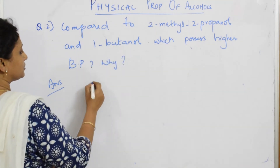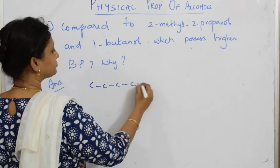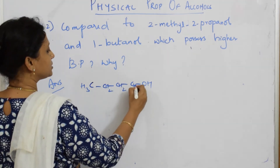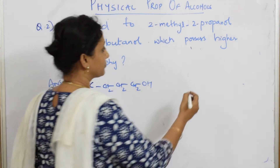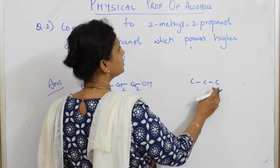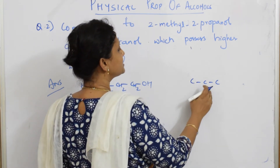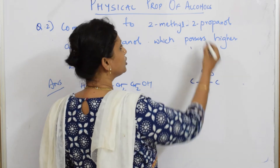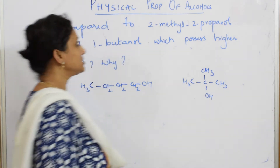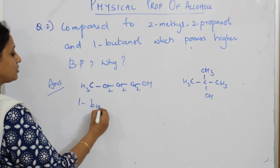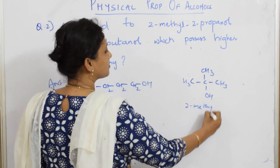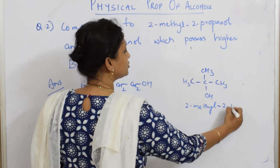So I have 1-butanol: 1, 2, 3, 4 — OH. That is CH₃-CH₂-CH₂-CH₂OH. Now I have to write 2-methyl-2-propanol. Propane has 3 carbons: first carbon, second carbon — on the second carbon I have my methyl group and OH. So this is 1-butanol and this is 2-methyl-2-propanol.